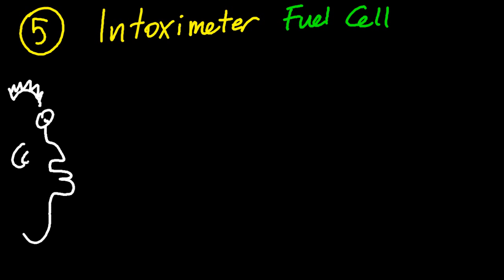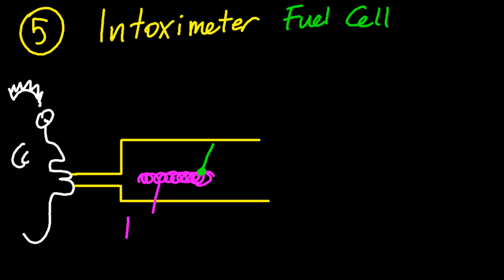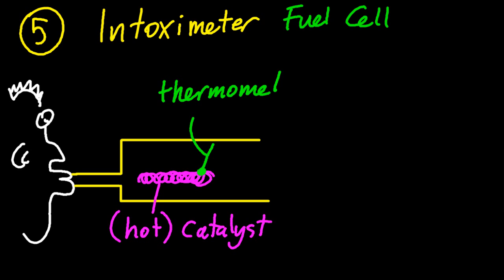And finally five is another intoximeter. This time it's based on the fuel cell. So we have our good-looking guy blowing into this sort of intoximeter, and it has a catalyst and a thermometer, that's very simple there, probably a hot catalyst and a thermometer there. Now alcohol is a fuel, and if you have alcohol present on your breath, when it hits the hot catalyst, it will oxidize to make carbon dioxide and water, and that's exothermic.